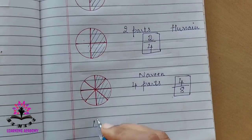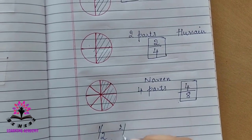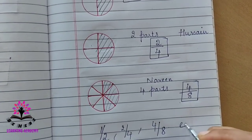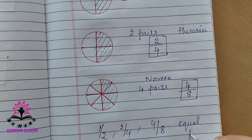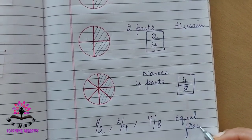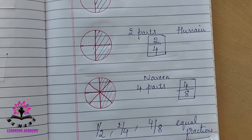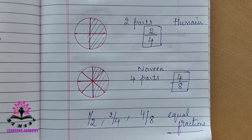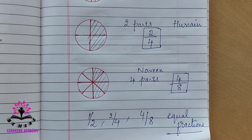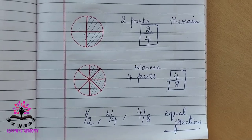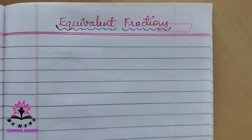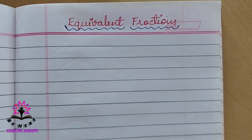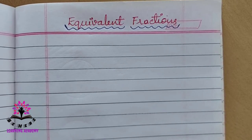So we say that 1/2, 2/4, and 4/8 are equal fractions. What are equal fractions? Fractions showing the same quantity are called as equal fractions. Now let us study about equivalent fractions.